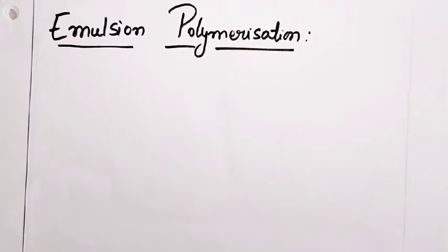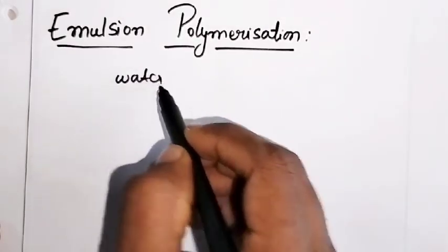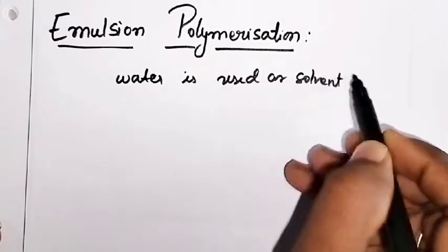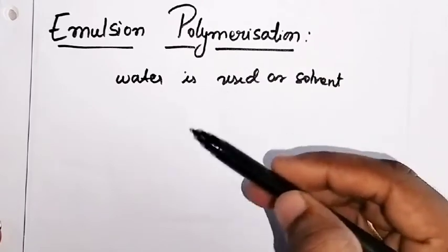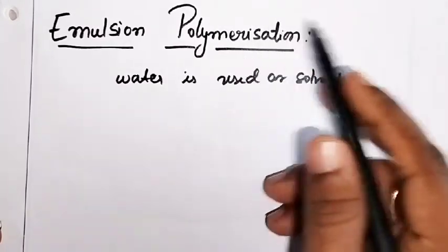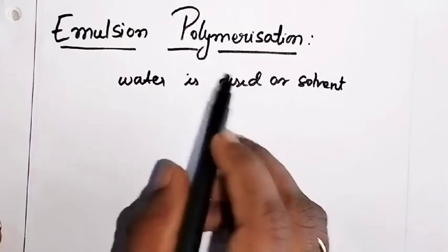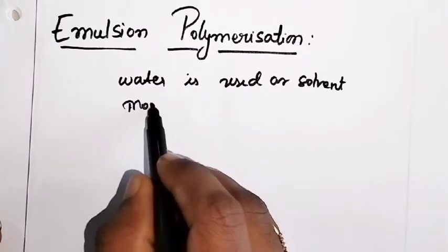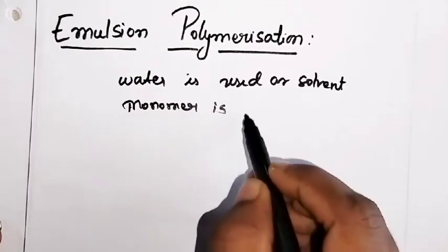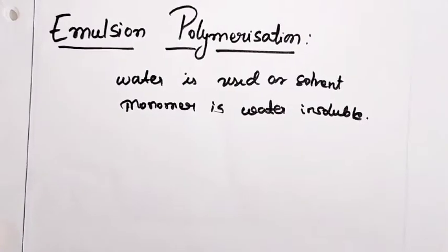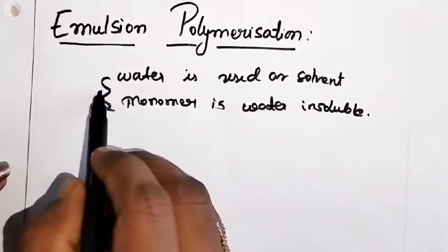Just like we studied in the suspension polymerization, water is used as the solvent. Here also, the water is used as the solvent. And whatever monomer you have taken, that will be water insoluble. The same condition applies — water is used as a solvent and the monomer is water insoluble. The same concept applies here also.